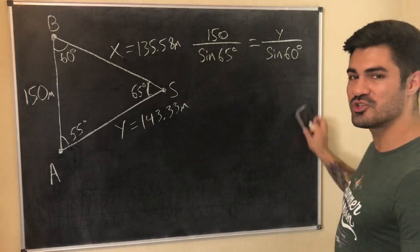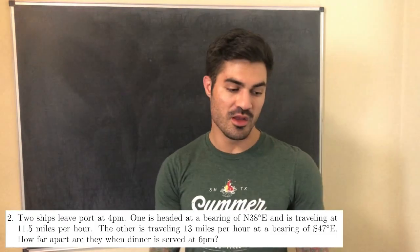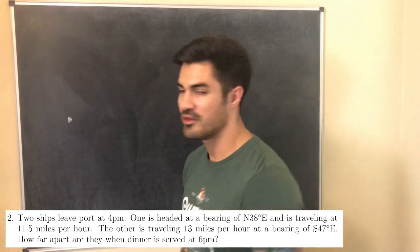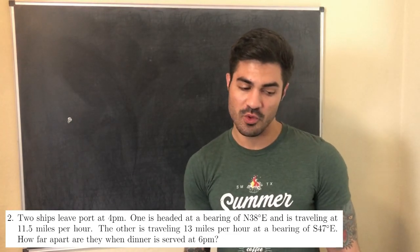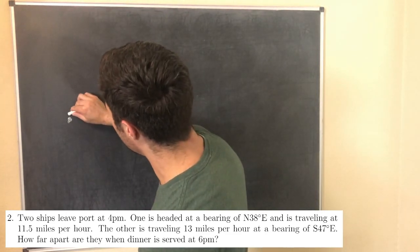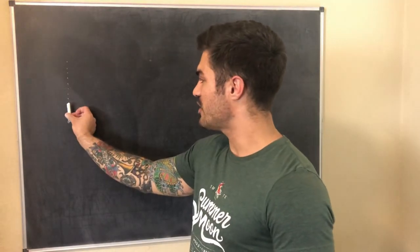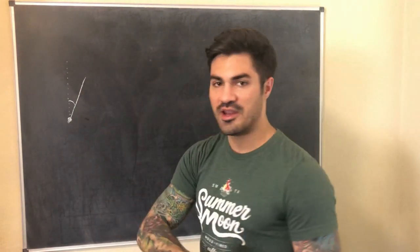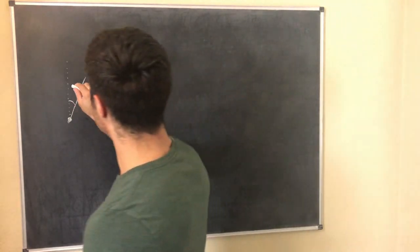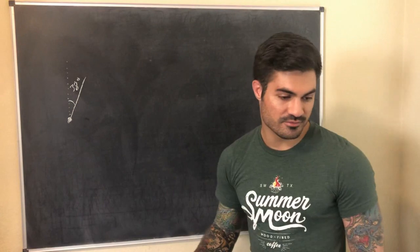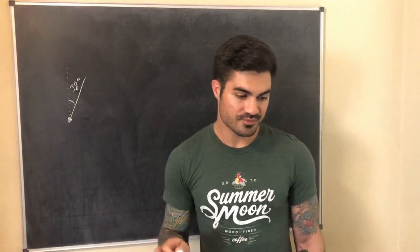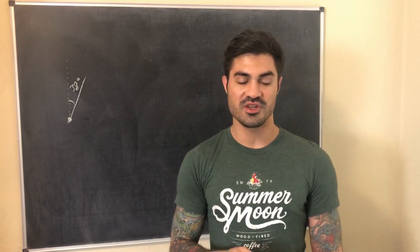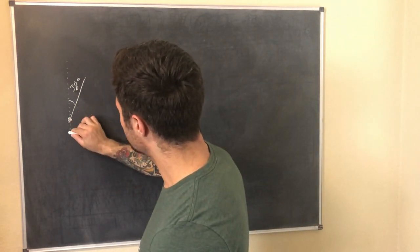Let's move on to problem two. Two ships leave port at 4 p.m. One is headed at a bearing of north 38 degrees east — so I draw a north dotted line, face north, and open up 38 degrees to the east. That angle is 38 degrees. This ship is traveling at 11.5 miles per hour. The other is traveling at 13 miles per hour at a bearing of south 47 degrees east, so I face south and open up 47 degrees to the east — that angle is 47 degrees.